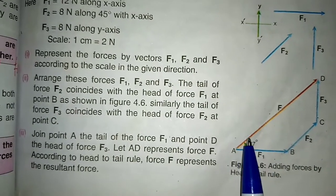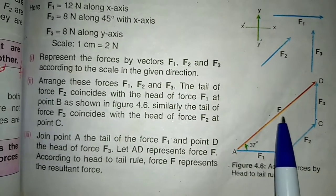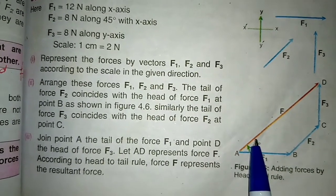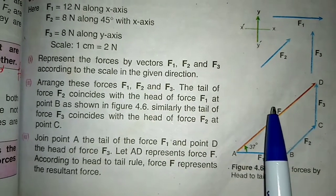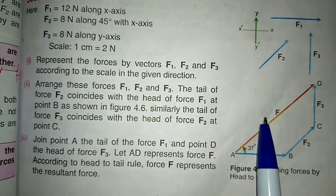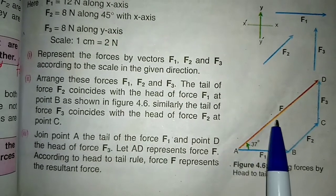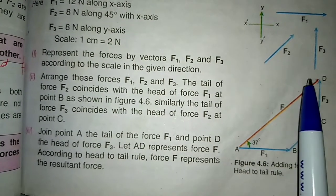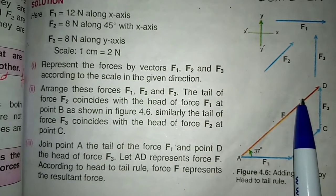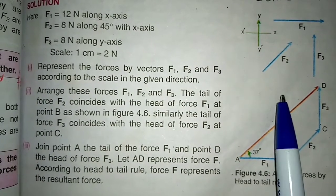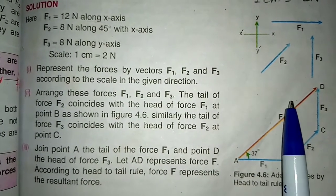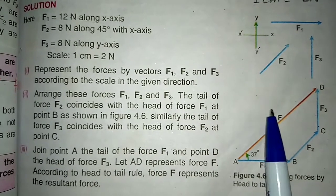Now, we will simply measure the length of this vector using the scale we have devised: 1 cm equals 2 newton. So, if we calculate the length of this vector, whatever length comes, simply multiply it by 2. We will have the resultant answer in newtons.